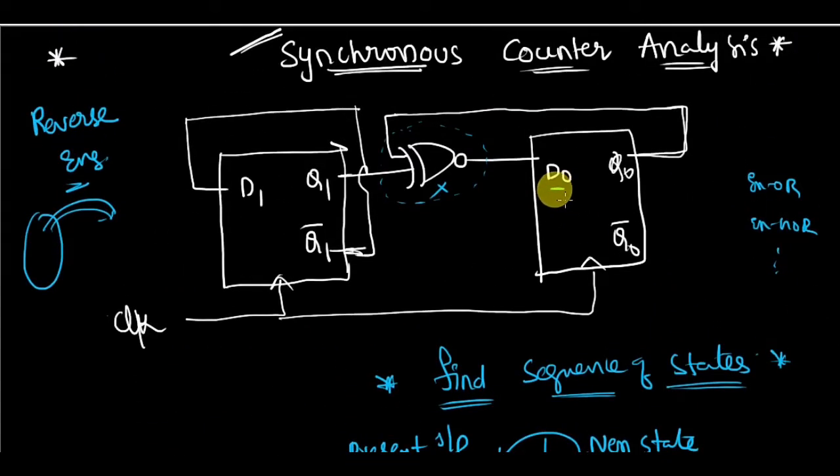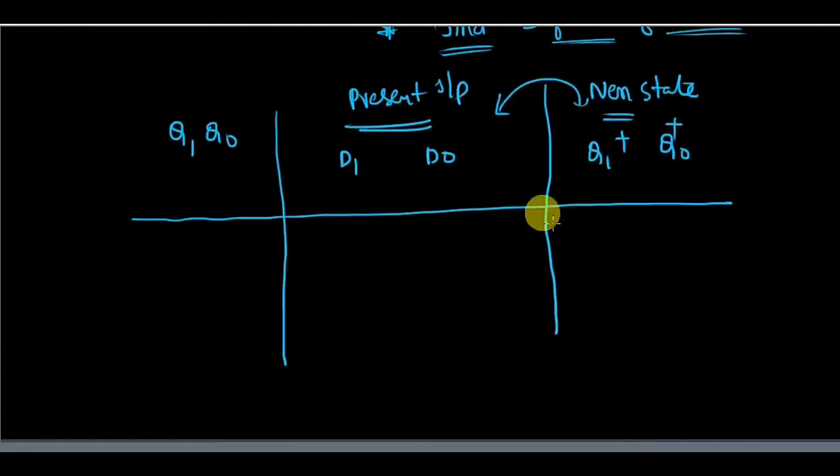You can see here d0 is nothing but q0 XOR with q1, and d1 is nothing but q1 bar. You can see these connections. So I am going to write the same here: d1 is nothing but q1 bar, where d0 is q1 XOR with q0.